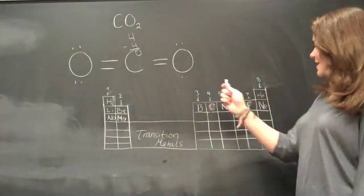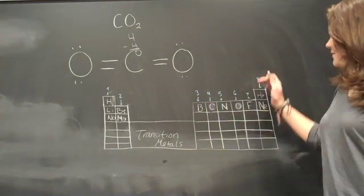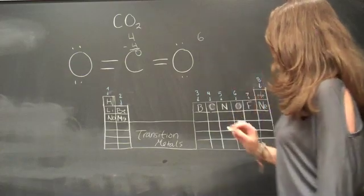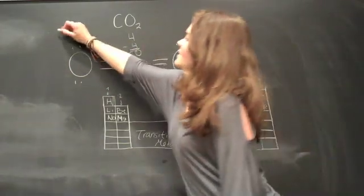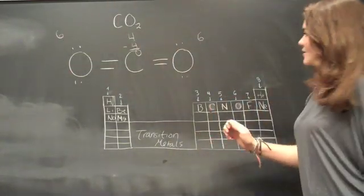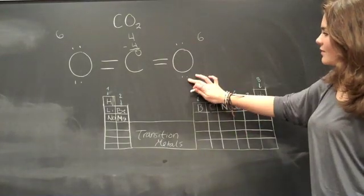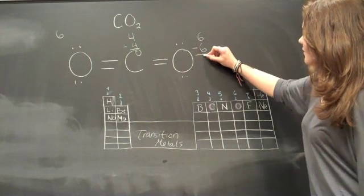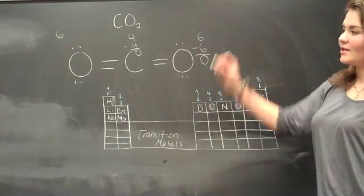As for oxygen, you can see from the periodic table that it has six valence electrons. And then you can see that it has one, two, three, four, five, six. So you subtract six from here. And that formal charge for oxygen is zero here as well.